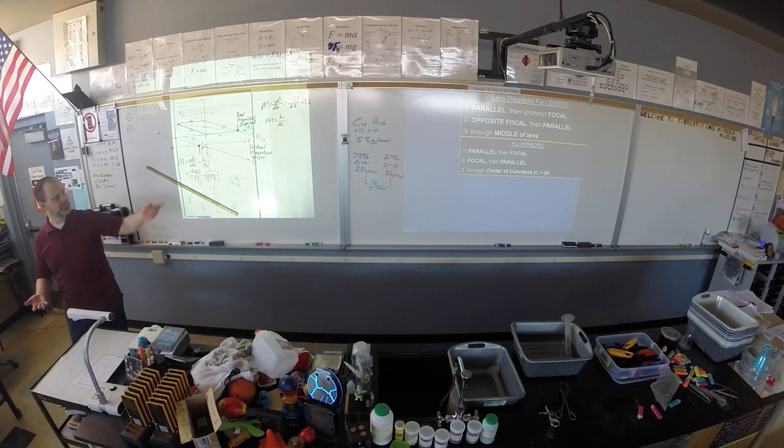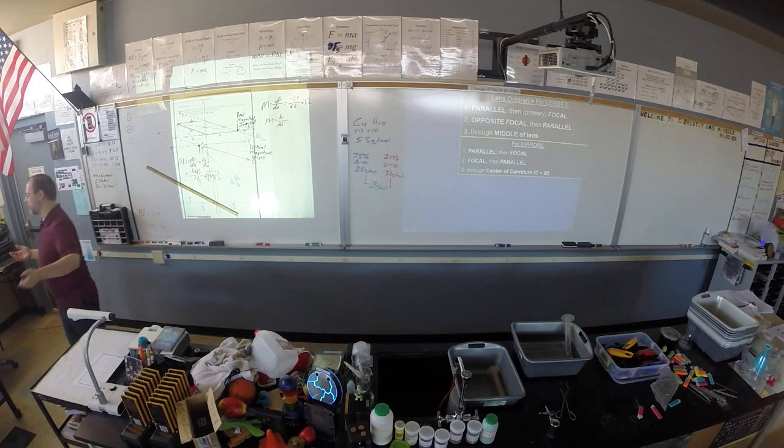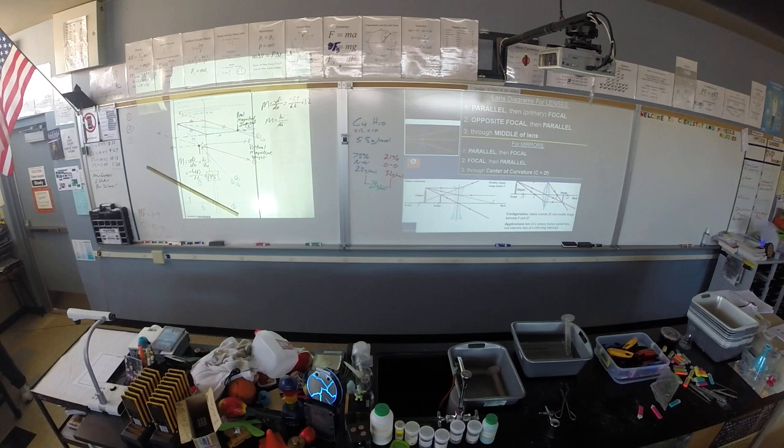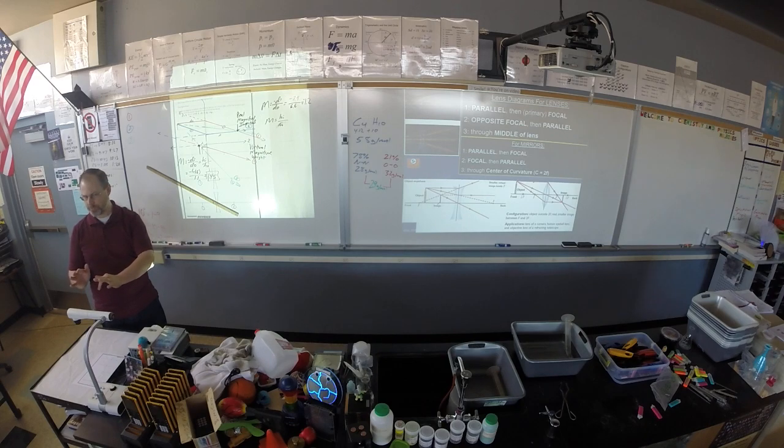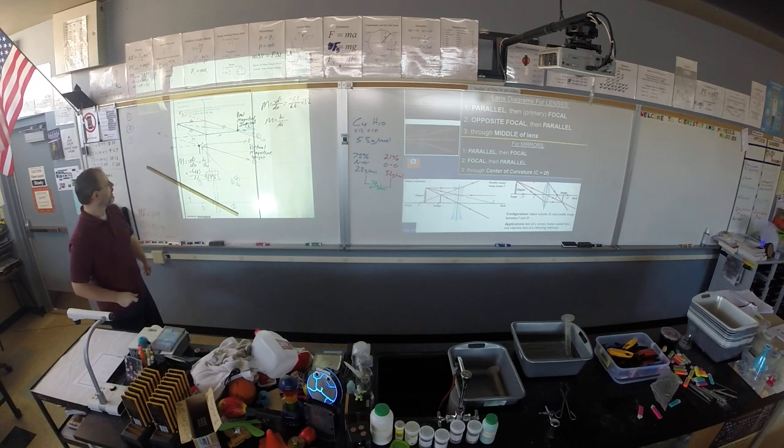And you can use the equation, right? 1 over F equals 1 over DO plus 1 over DI. You can use that. We don't have to go through that a million times again, right? Am I correct in assuming that we don't have to do that again? You can do it on the worksheet. It's exactly the same math.